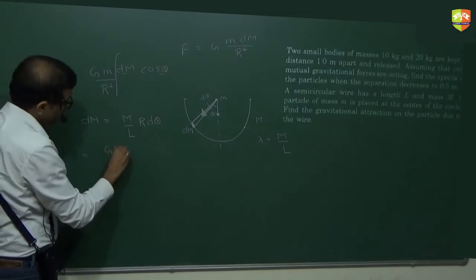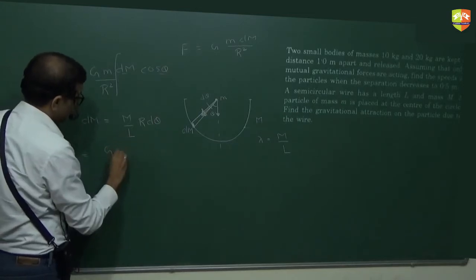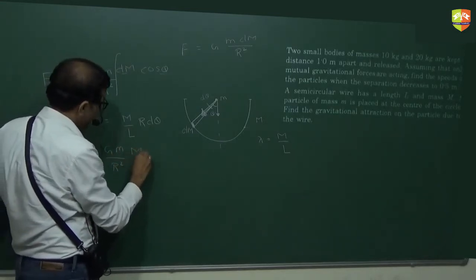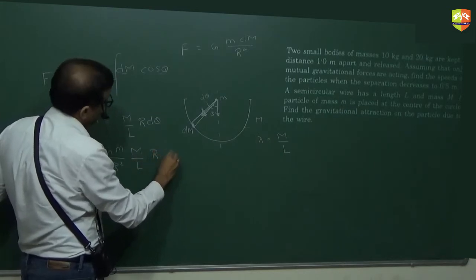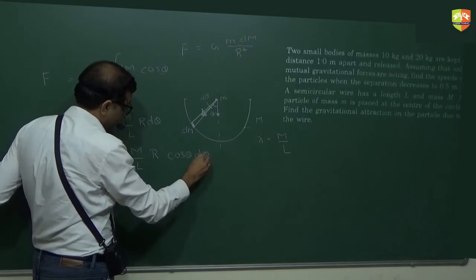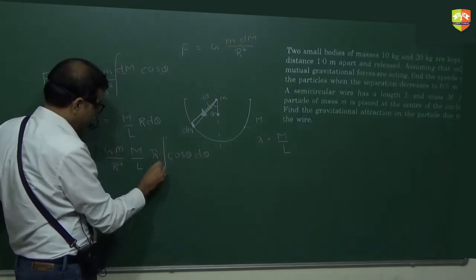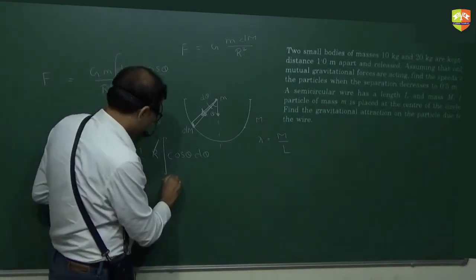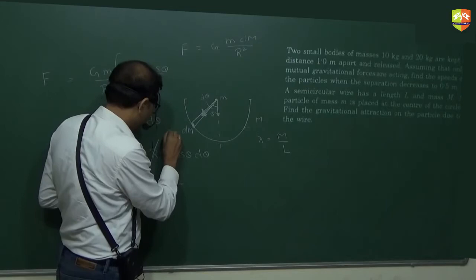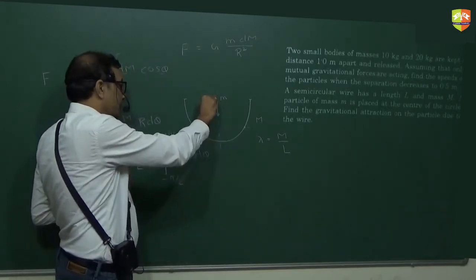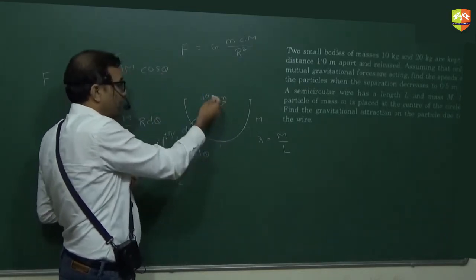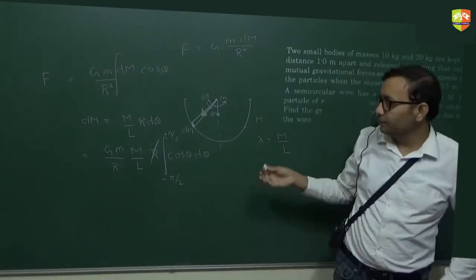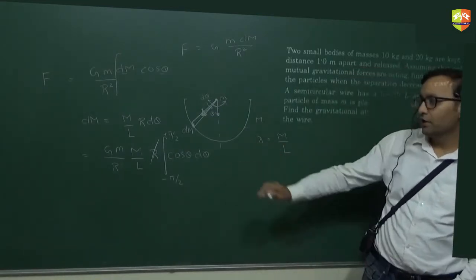So I will substitute there: g m by r square, dm is m by l r, it will be cos theta d theta. What will be the limits of integral? Minus pi by 2 to pi by 2. Because I am first going in this way and then going in that way. Clockwise and anti-clockwise I am moving. So my orientation of angle is changing. So if one orientation is positive, the other will be negative. Like this.